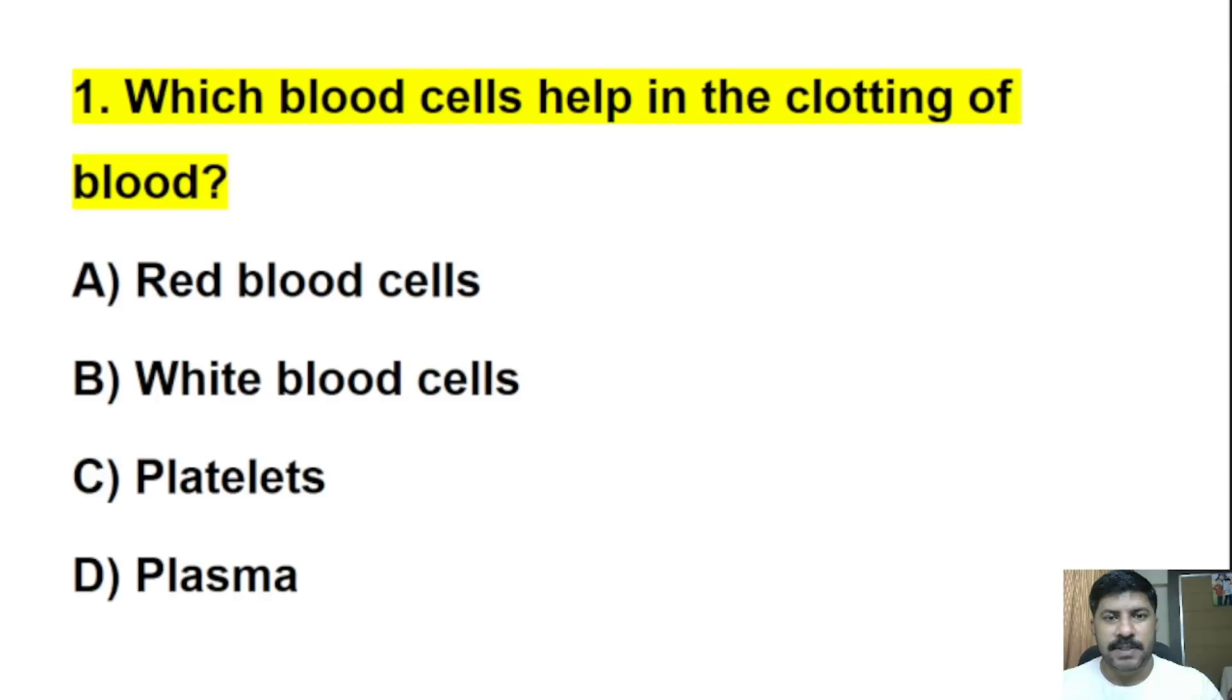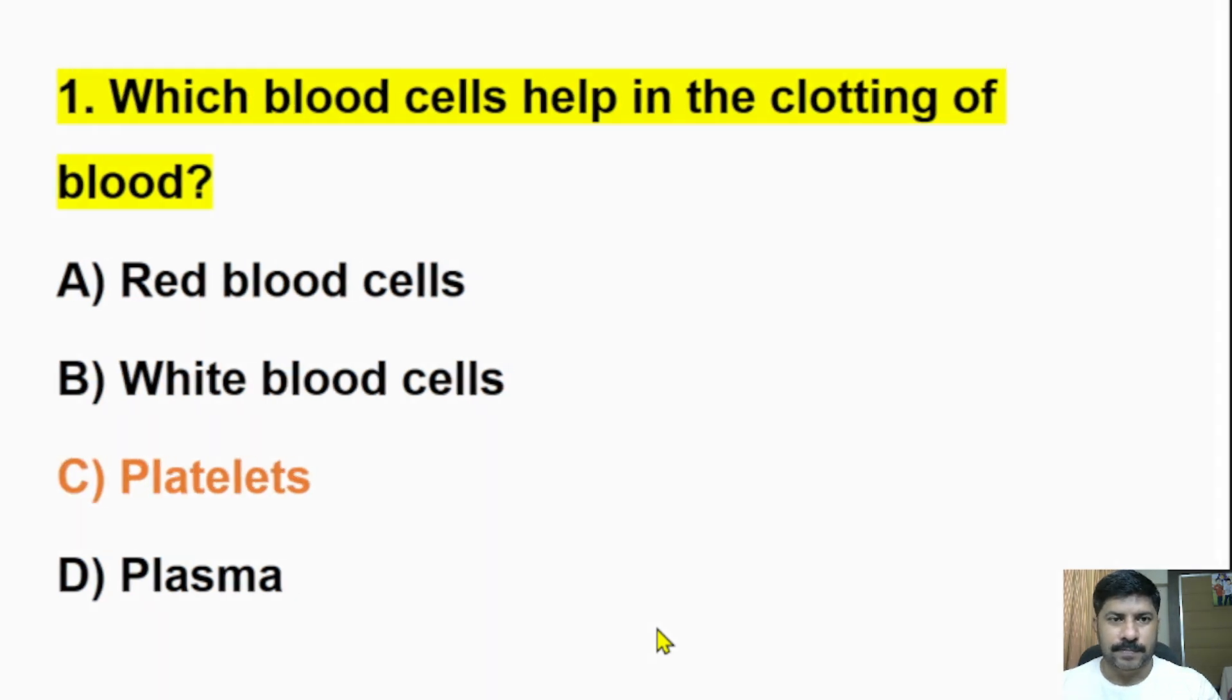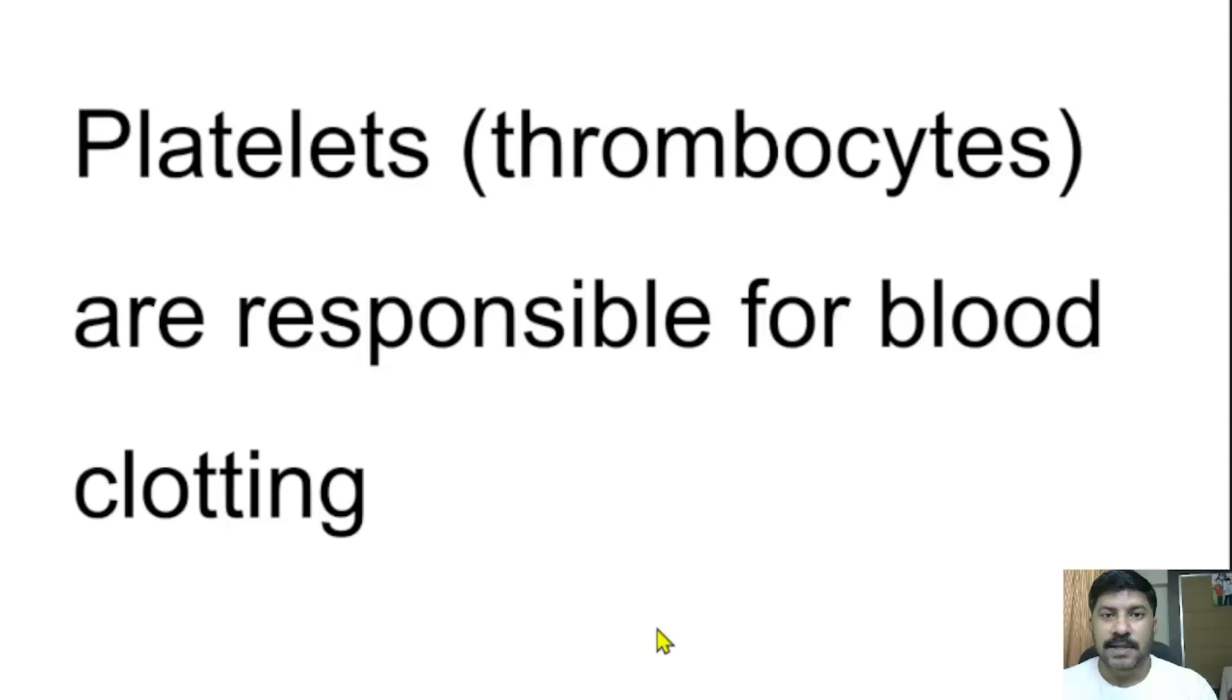First question: Which blood cells help in the clotting of blood? Red blood cells, white blood cells, platelets, or plasma? The correct answer is platelets. Platelets, also known as thrombocytes, are responsible for blood clotting.